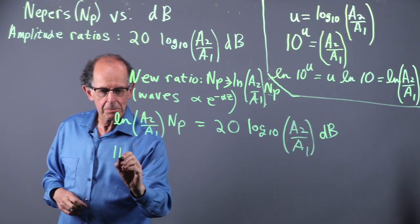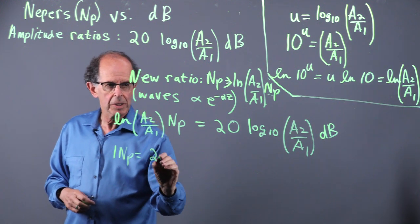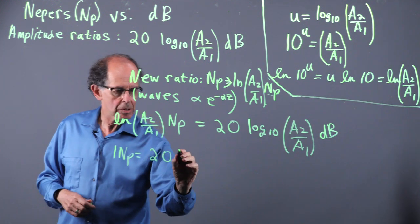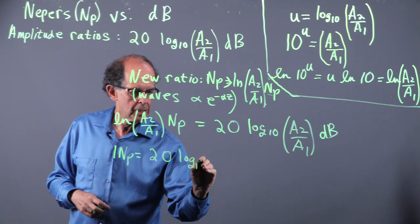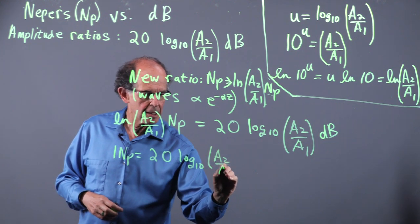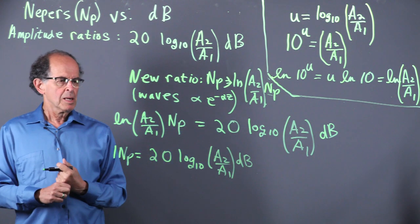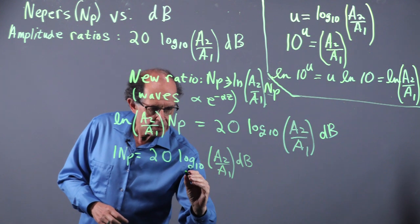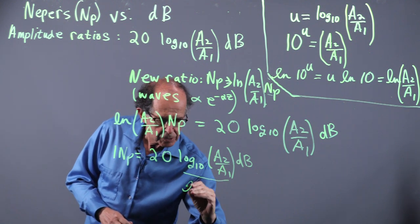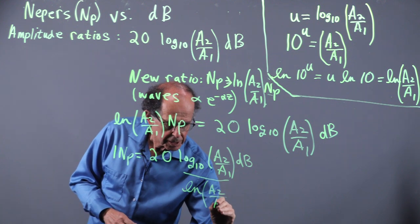So one NIPR is equal to 20 times log 10 of A2 divided by A1 dB, divided by, of course, natural log of A2 over A1.